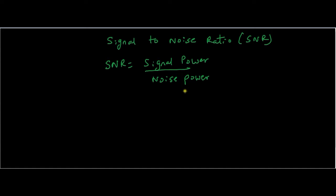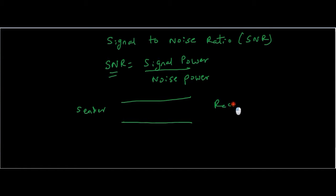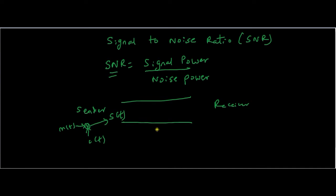Coming to communication systems, it becomes very important for us to define this term called signal to noise ratio. Consider this is our communication channel — here is our sender and here is our receiver. What invariably happens is we modulate our message signal M(t), combine it with a carrier to produce modulated signal S(t). This S(t) will not reach the receiver as S(t) because the channel, which acts as a mediator, will introduce some noise W(t). So at the receiver side we get our signal as S(t) plus W(t).